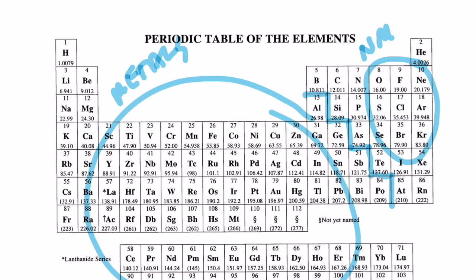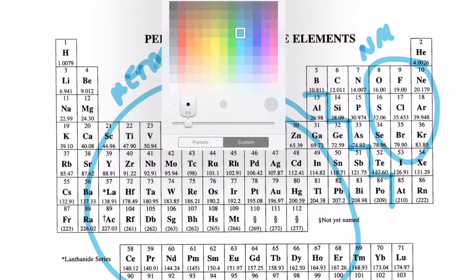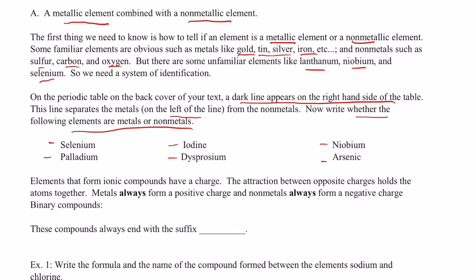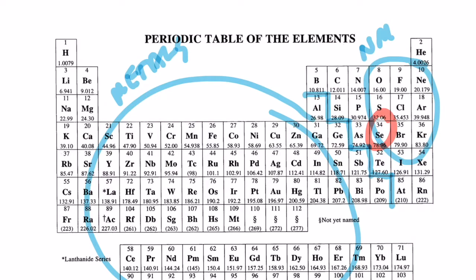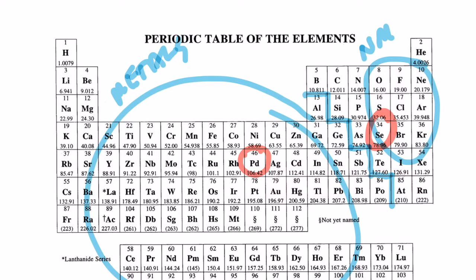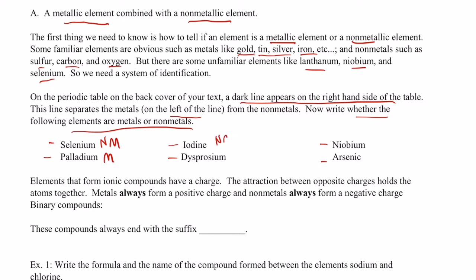So let's take a look at a few of these. Selenium first. We'll highlight this maybe in red. So, selenium is right here, kiddos. Looks like that is a nonmetal. And how about palladium next? So, palladium is right here. And that looks to me like that is a metal. Let's do iodine next. Iodine is right over there. So, that is a nonmetal.